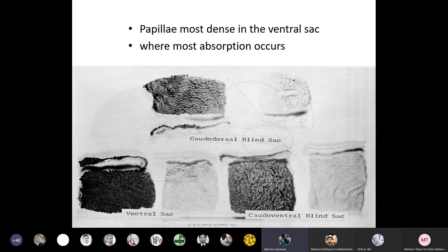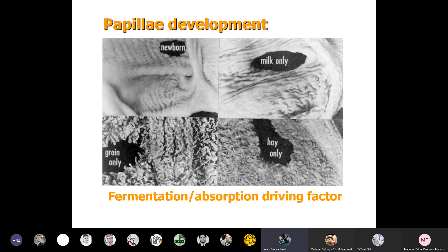The papillae are most dense in the ventral sac where the most absorption occurs, in the caudal dorsal blind sac, the ventral sac, and the caudal ventral blind sac. Papillae development occurs at the newborn stage, during milking, when they eat grain, and when they eat hay. The rumen papillae enlarge as the animal becomes adult, whereas in newborns the papillae support absorption of milk. This absorption quality decreases in adults.